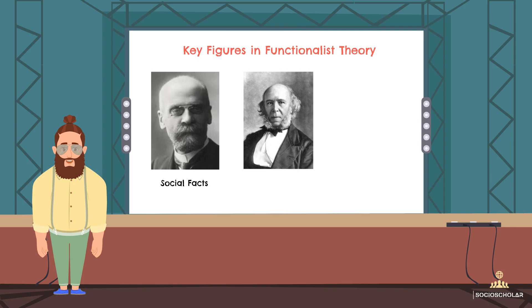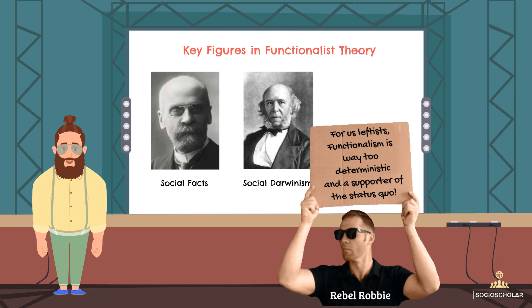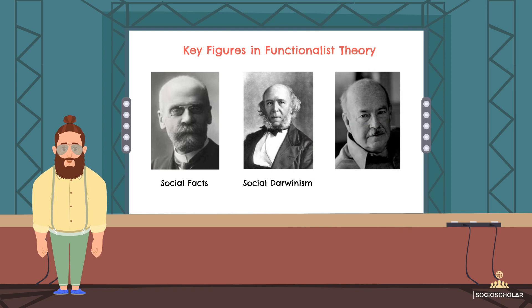Spencer's social Darwinism put forward that societies, like species, evolve through a survival of the fittest process. And last, but certainly not least, is Talcott Parsons. He took functionalism into the 20th century and gave it some new shine. Parsons argued that all parts of society are interrelated and work together to form a complete system. When each part does its job, society remains balanced and stable. His grand theory, the AGIL schema, broke down this process into four main functions: adaptation, goal attainment, integration, and latency. These theorists all had their differences, but they all believed in the idea that society is like a well-oiled machine with different parts working together, and this concept became the backbone of functionalism.